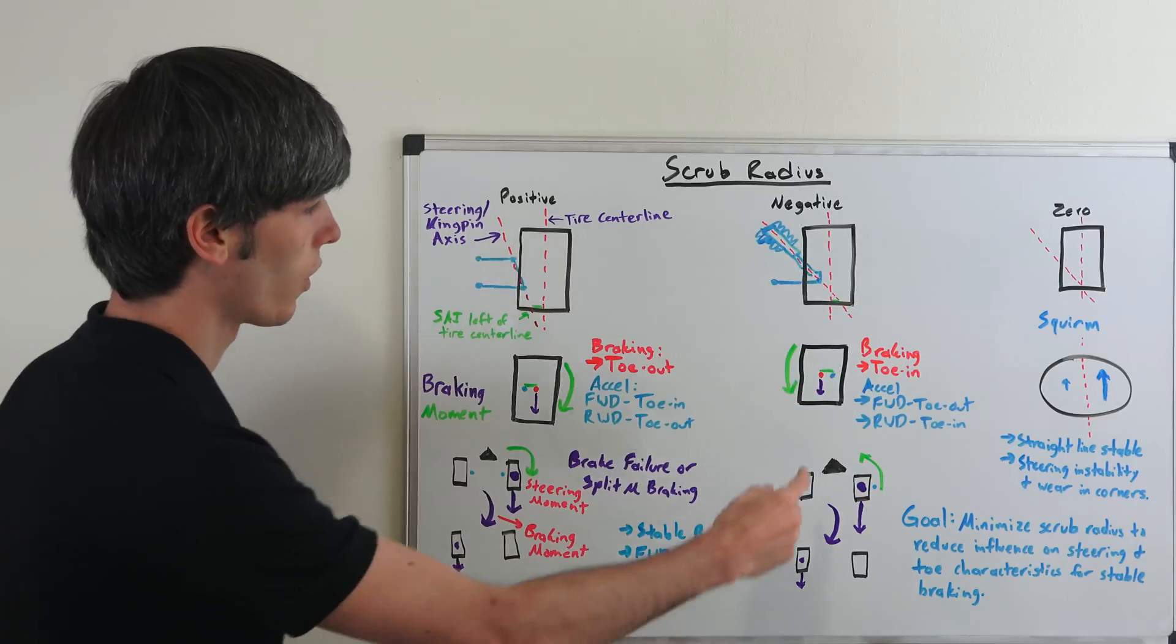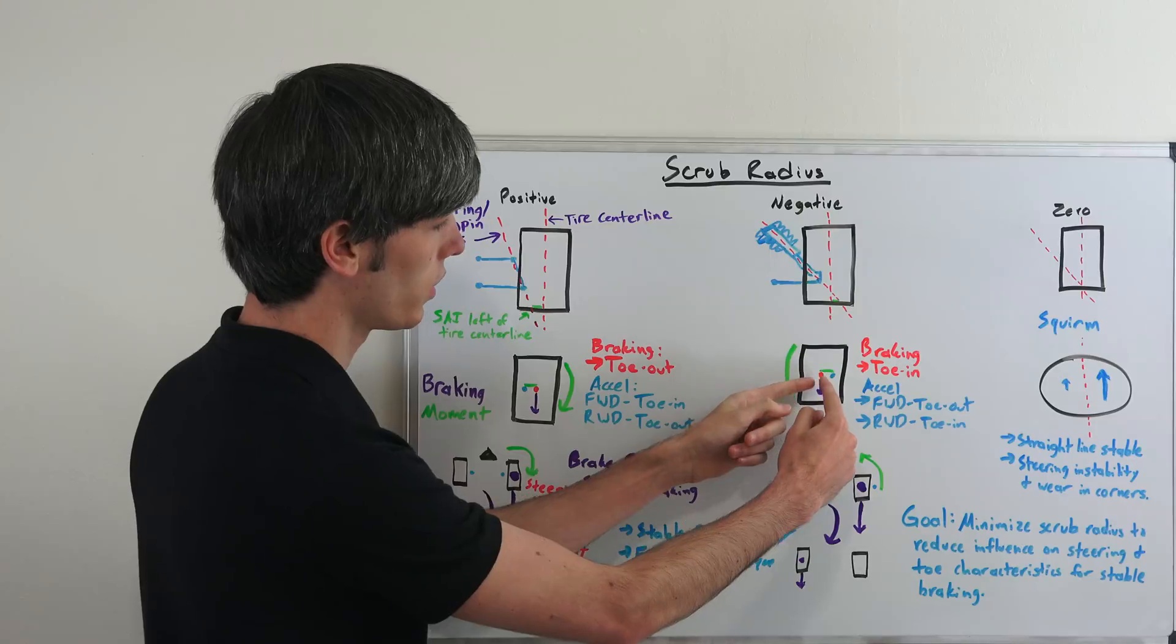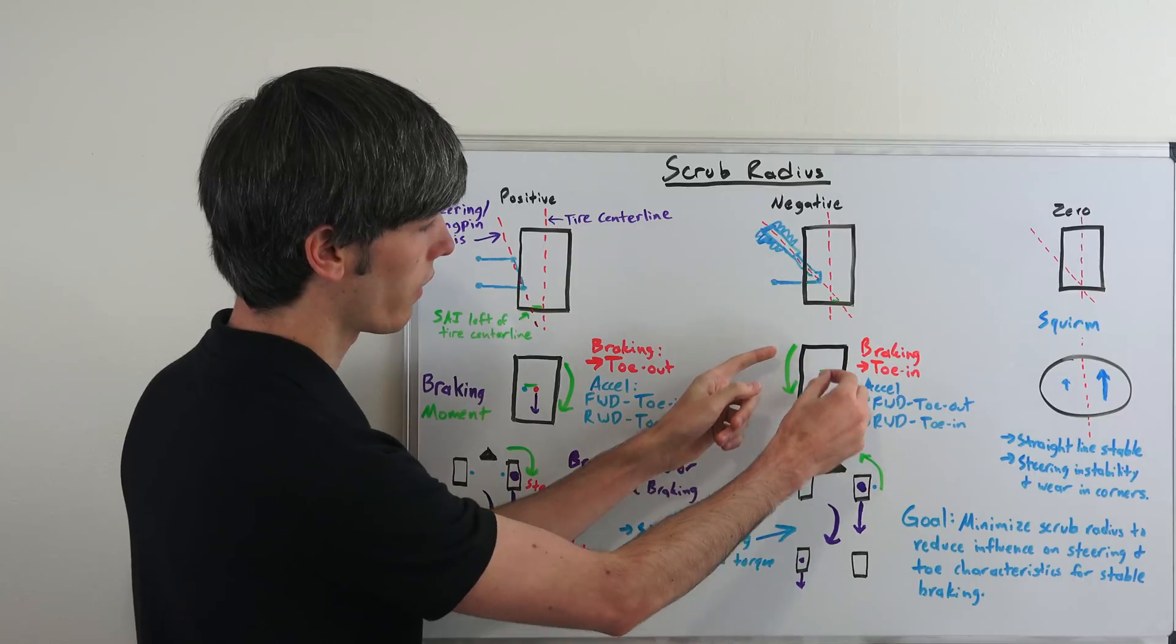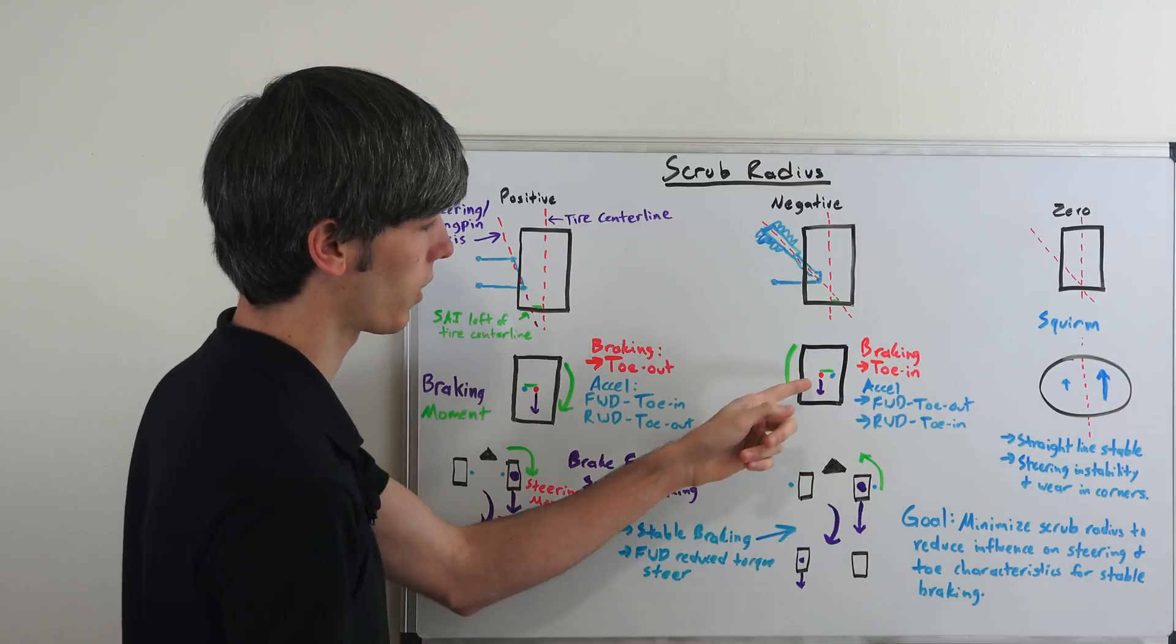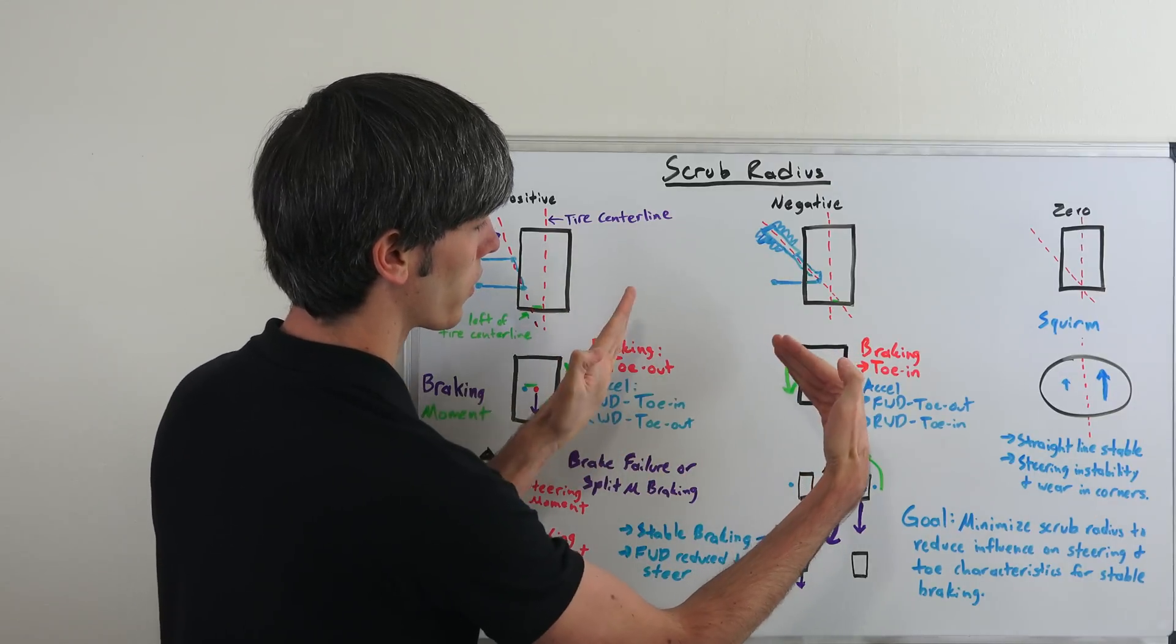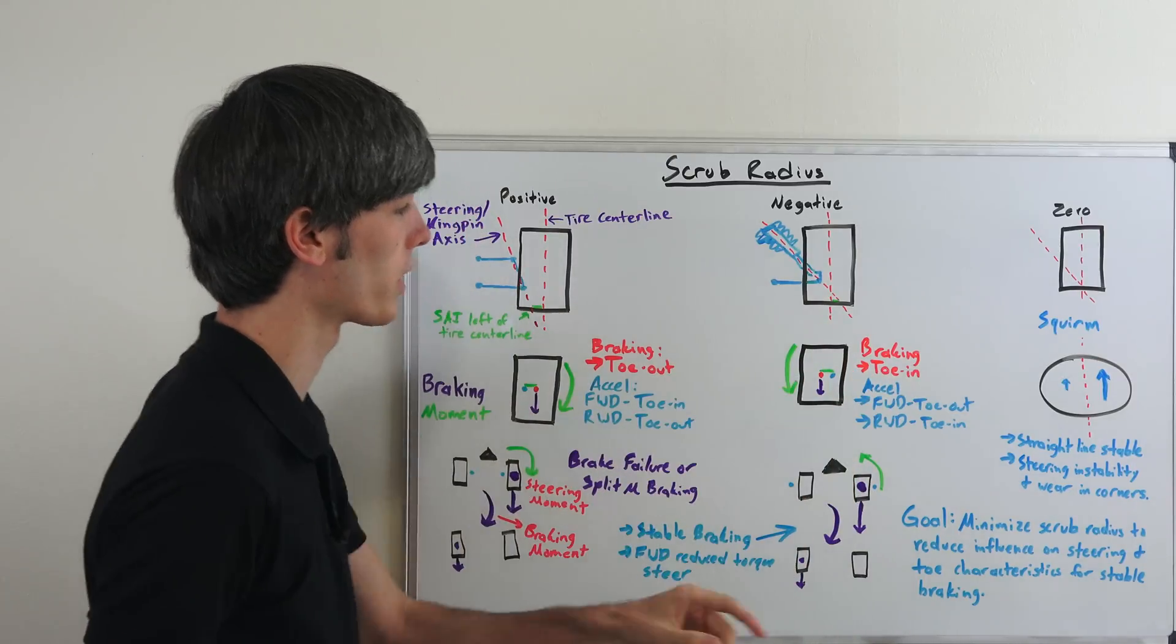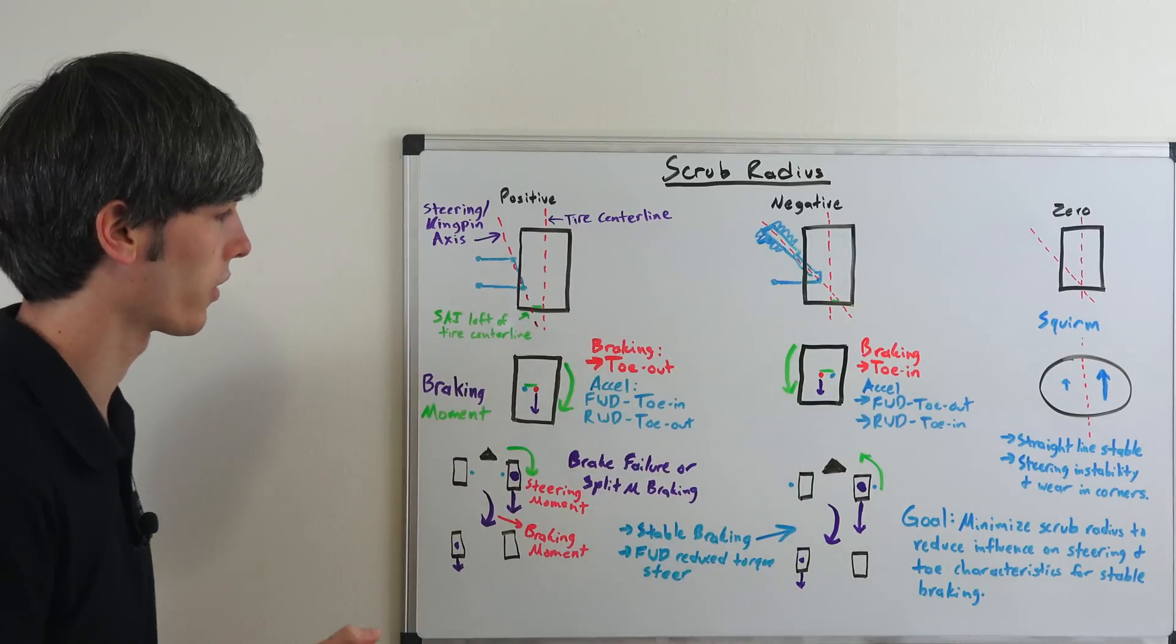If you have negative scrub radius, so as you can see here, you've got your red dot, you've got your moment about the point at which it rotates. So under heavy braking, the braking force there in purple, you're going to have tow in so those two front wheels are going to want to bend in. Under acceleration they're going to want to tow out from the moment created because of that scrub radius.